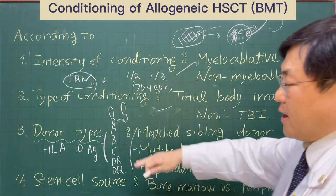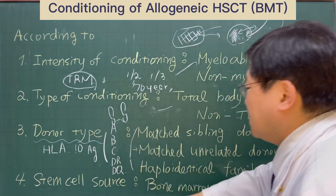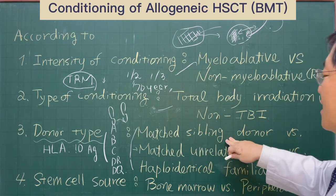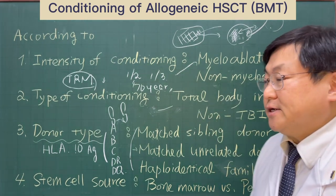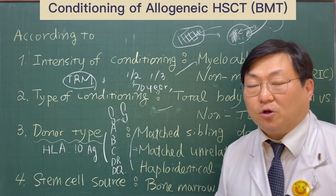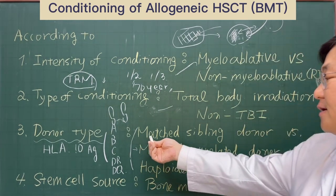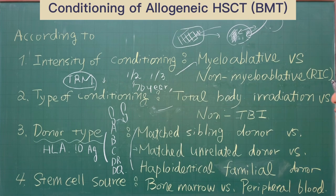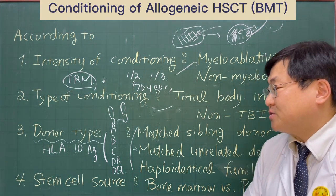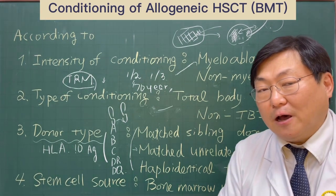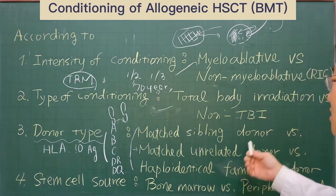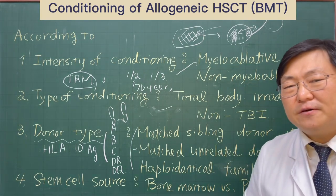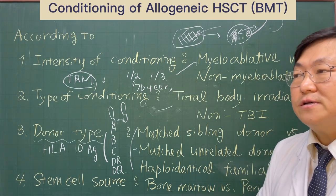So if all HLA are matched totally, and if the donor has a sibling relationship with the patient — in other words, if the patient is the brother or sister of the donor — we can designate this donor as a matched sibling donor. Basically, the matched sibling donor is the best option for allogeneic cell transplantation because all transplantation outcomes are best when we use a matched sibling donor. But recently, the availability of matched sibling donors is now limited because we don't have enough siblings and the number of children is decreasing.